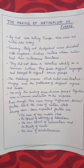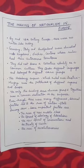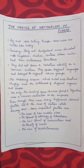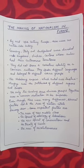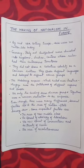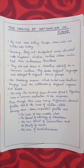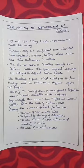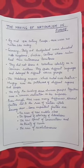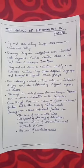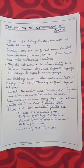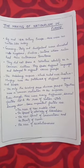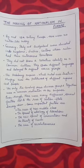Now we come to the making of nationalism in Europe. By the mid-18th century, there were no nation-states like those of today. Germany, Italy, and Switzerland were divided into kingdoms, duchies, and cantons where rulers had their own autonomous territories. They did not share a collective identity or a common culture — they spoke different languages and belonged to different ethnic groups. The Habsburg Empire, which ruled over Austria-Hungary, was a patchwork of different regions and peoples, with the only tie being common allegiance to the Emperor.